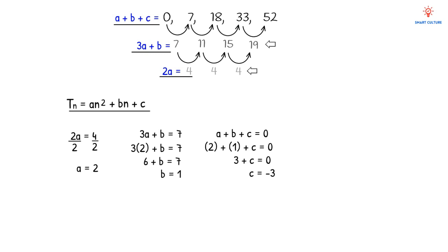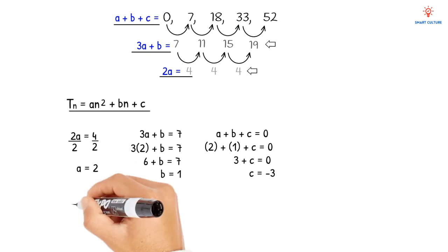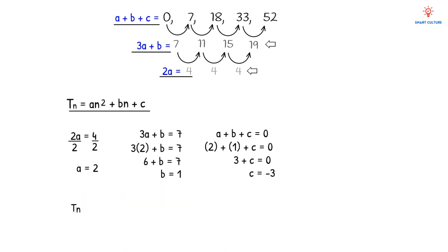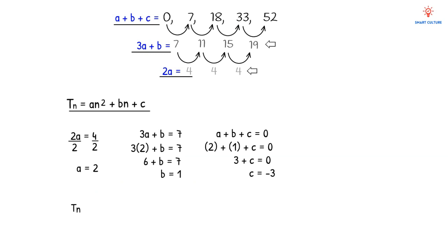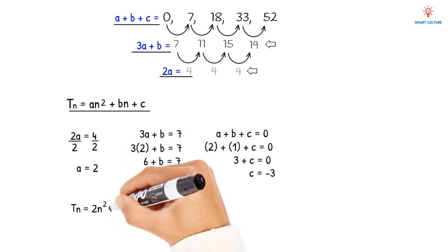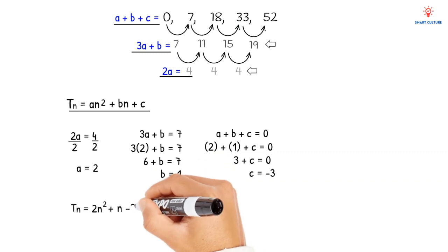Now we have all three values: a = 2, b = 1, and c = −3. Substituting into the quadratic formula Tn = an² + bn + c, the rule for this quadratic sequence is Tn = 2n² + n − 3.